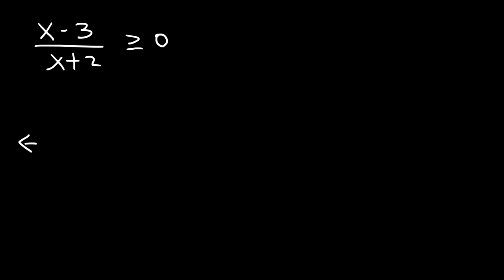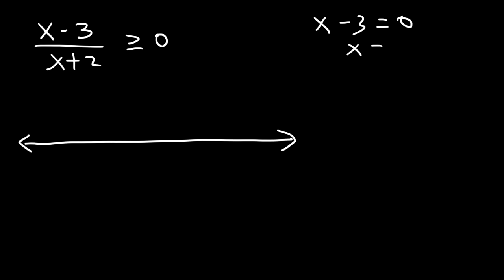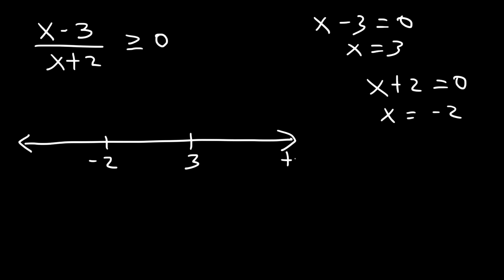So let's start with a number line. We need to set the numerator equal to 0, so x equals 3. And if we set the denominator equal to 0, the second point of interest is negative 2. So we have negative 2 and 3 on the number line, with positive infinity to the right and negative infinity to the left. Notice that x plus 2 is on the bottom, and if you have a 0 on the bottom, the function is undefined — so x plus 2 should not equal 0. Therefore, at negative 2 we have an open circle, but the numerator can equal 0, so we have a closed circle at 3.